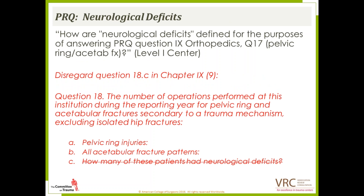A question about neurological deficits in the PRQ: how are neurological deficits defined for purposes of answering question 18 in Chapter 9 (orthopedic section), which covers pelvic ring injuries, all acetabular fracture patterns, and how many patients had neurological deficits? That third part about neurological deficits is not applicable to question 18, so we are going to remove it from the PRQ. For any trauma centers undergoing a site visit in the next year or so, if this question displays on your PRQ, please skip it and leave it blank.